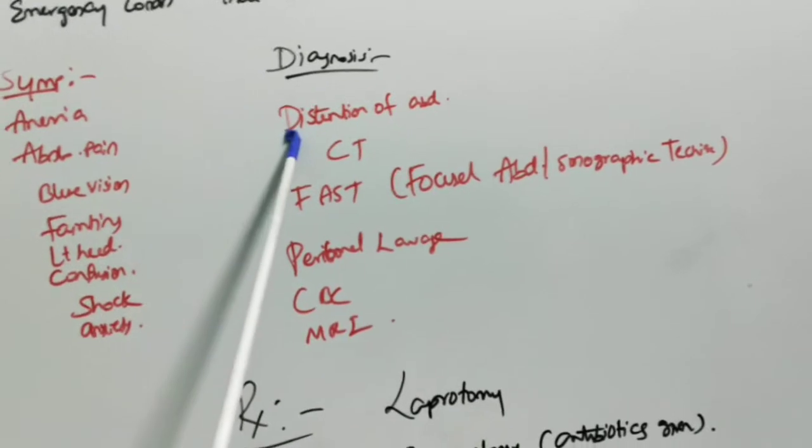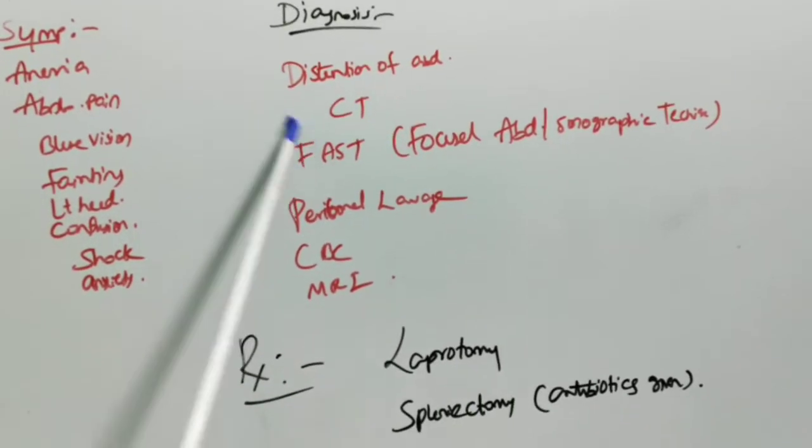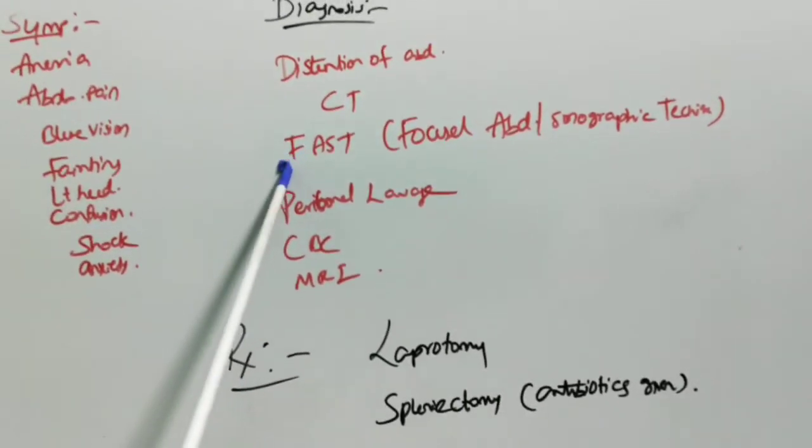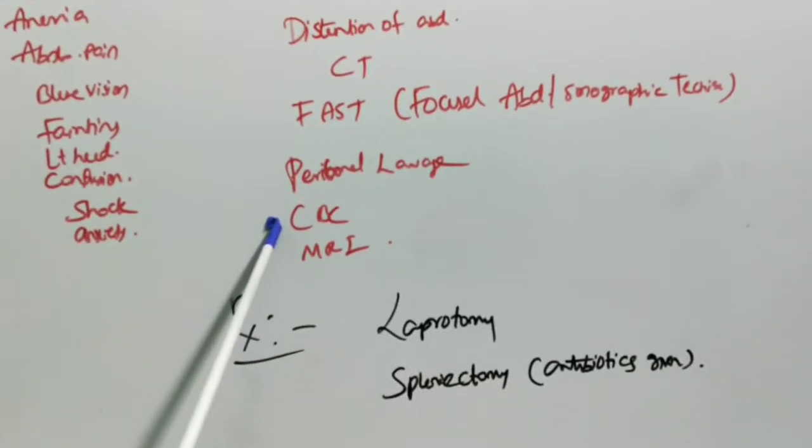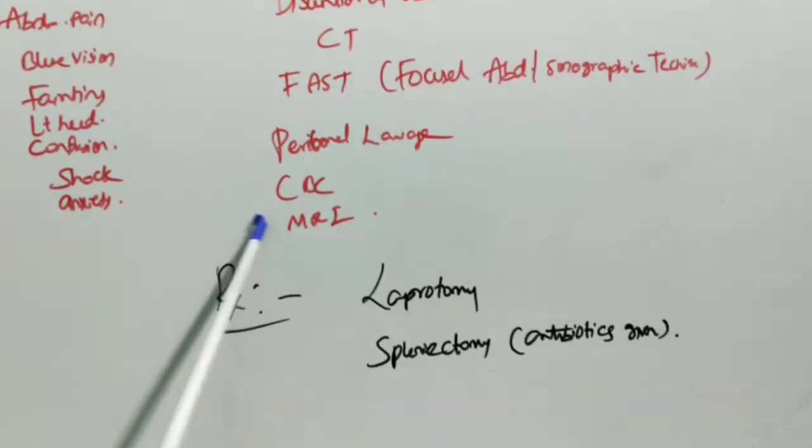Diagnosis includes distension of abdomen, CT scan, FAST (Focused Abdominal Sonographic Technique), peritoneal lavage, complete blood count (CBC), and MRI.